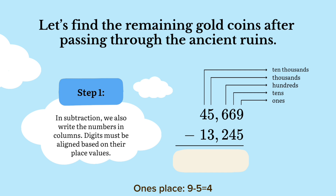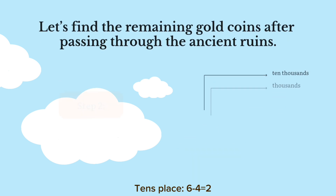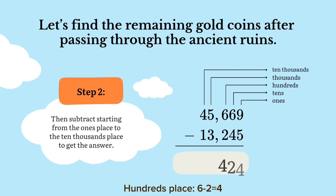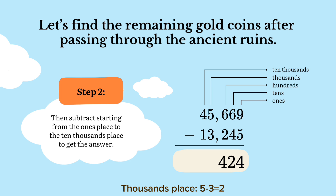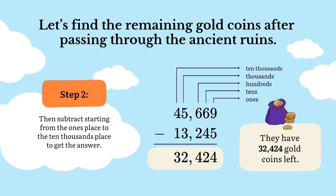Ones place: 9 minus 5 is equal to 4. Tens place: 6 minus 4 is equal to 2. Hundreds place: 6 minus 2 is equal to 4. Thousands place: 5 minus 3 is equal to 2. Ten thousands place: 4 minus 1 equals 3. They have 32,424 gold coins left.